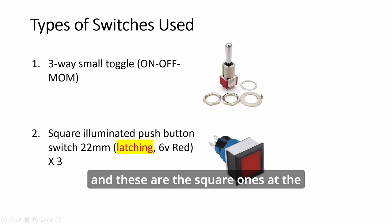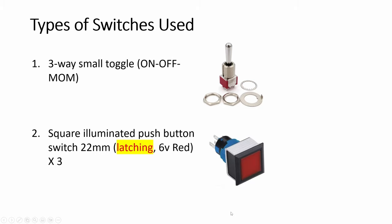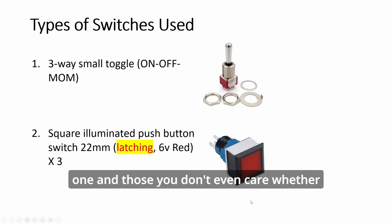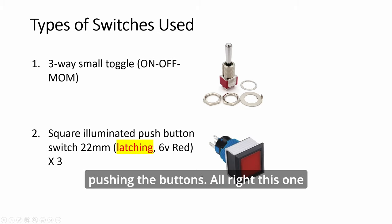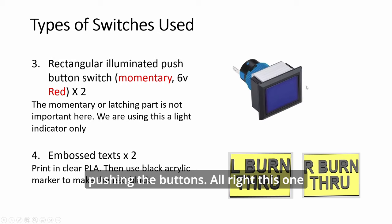And these are the square ones. At the bottom, the burn through lights, you actually need a rectangle one, and those you don't even care whether they are latching or momentary because you are not pushing the buttons. You want this to be the other one. This one here, obviously choose red, and then have two.